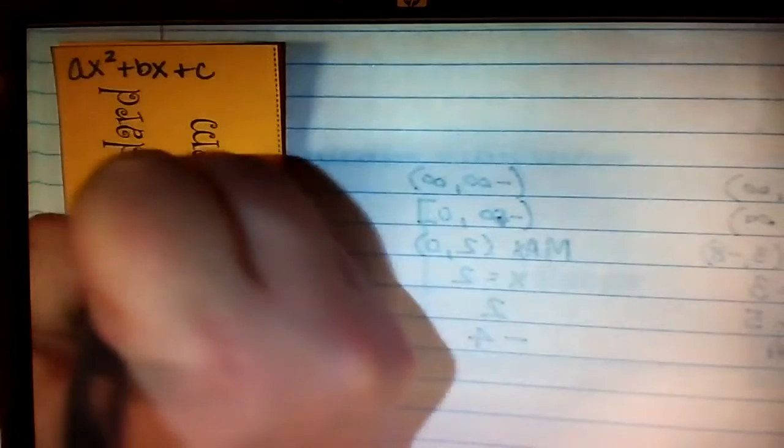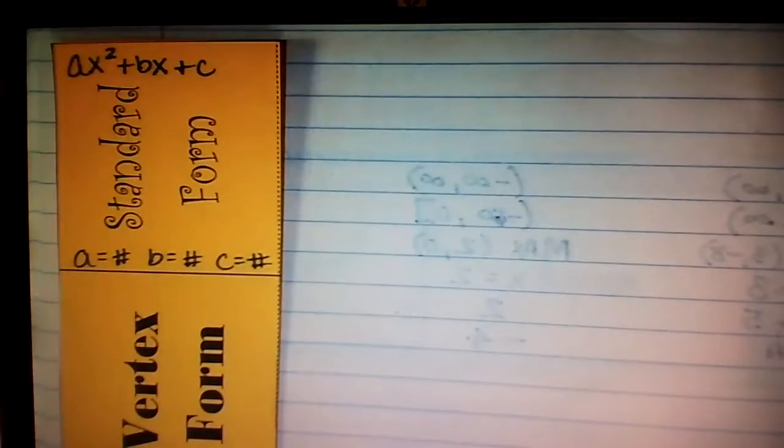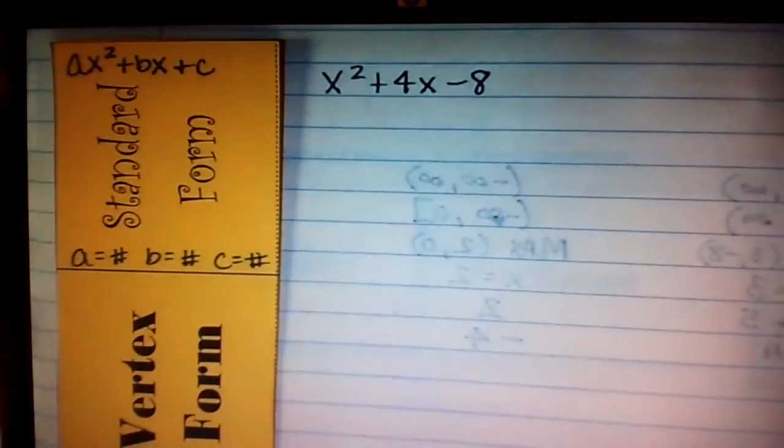So, these are standard forms. A is going to be some number, B is going to be some number, and C is going to be some number. The A, B, and C are actually number values.